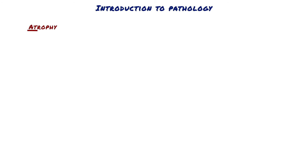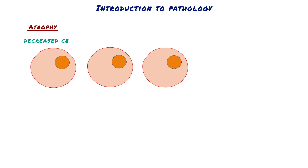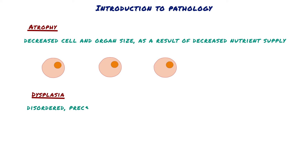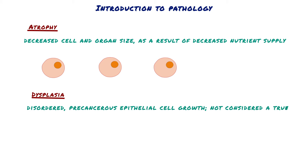Atrophy is a decreased cell and organ size as a result of decreased nutrient supply. Dysplasia refers to pre-cancerous epithelial cell growth and is not considered a true adaptive response.